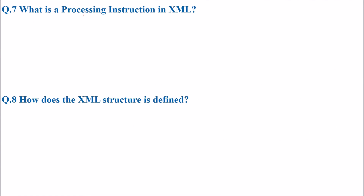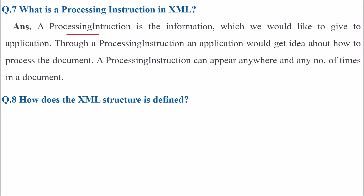The next question: what is a processing instruction in XML? A processing instruction is information which we would like to give to the application. Through a processing instruction, an application gets an idea about how to process that document — we are giving an instruction about how to process in XML. Processing instructions can appear anywhere and any number of times in a document.